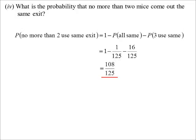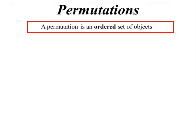So that's the basic counting idea. Now we're interested in specific types of situations called permutations and combinations. We'll start with permutations. All a permutation is, is an ordered set of objects — the events have to happen in a specific order.